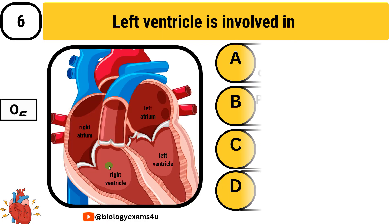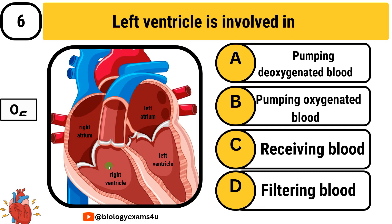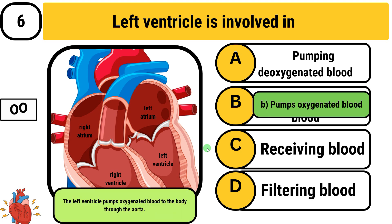Question number 6: Left ventricle is involved in — A: pumping deoxygenated blood. B: pumping oxygenated blood. C: receiving blood. D: filtering blood. The answer is pumping oxygenated blood. The left ventricle pumps oxygenated blood to the body through the aorta.